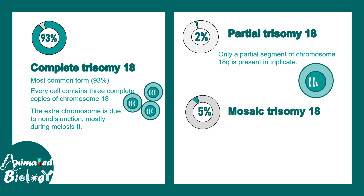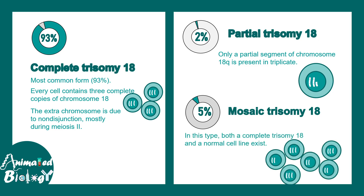Then there is mosaic trisomy 18, which is very rare. In mosaic trisomy, some cells of the body have normal chromosome 18 — two pairs — while other cells have three pairs of chromosome 18. The entire baby is like a mosaic, and the phenotype is highly variable, ranging from normal to severe.